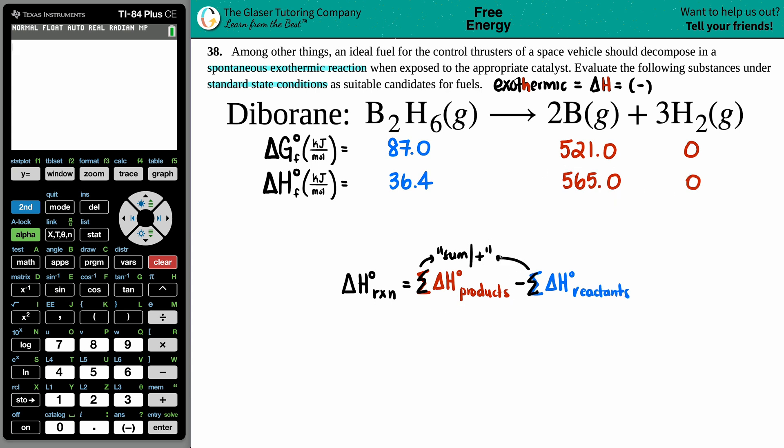Now are these numbers going to stay the same or are they going to be different? Well that goes by the balanced equation. How many do you have? Well I only had one B₂H₆, I had two B's and I had three H₂s.